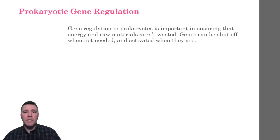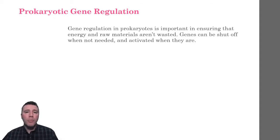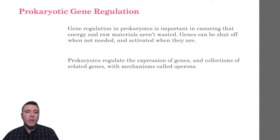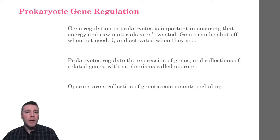Bacterial cells that can conserve raw materials and energy have an advantage over cells that are unable to do so. Evolution by natural selection, therefore, has favored bacteria that express only the genes whose products are needed by the cell during a particular time. Prokaryotes manage the expression of their genes using a regulatory system called an operon. An operon is a functioning unit of DNA containing a gene, or cluster of genes, under the control of a single promoter. An important advantage of grouping genes with related functions is that a single switch can control the entire group of functionally related genes.